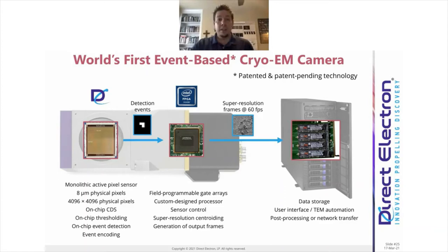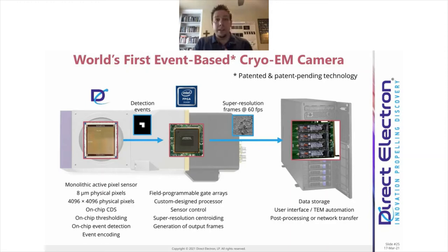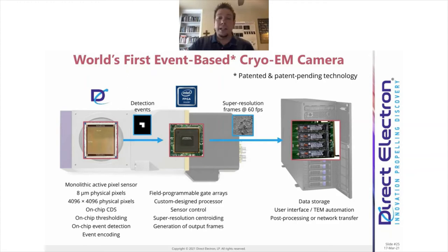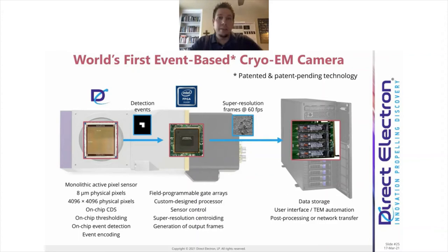These frames look very much like frames from a conventional camera in integrating mode, in that each frame has sufficient contrast to do motion correction. But instead of being integrating mode frames, these are counting frames — the camera is always providing electron counting inherently in hardware. That means the computer is no longer responsible for heavy processing. The computer is simplified to high-speed data storage, dumping data to disk and sending it out over the network; graphics cards can then handle particle picking, motion correction, and CTF estimation.